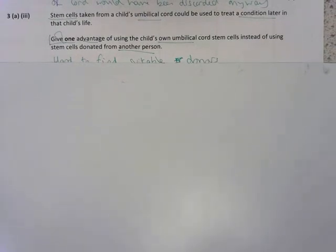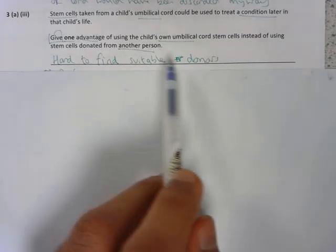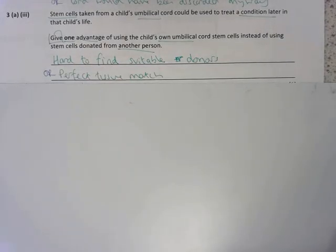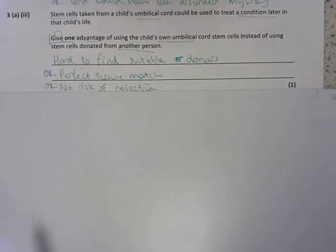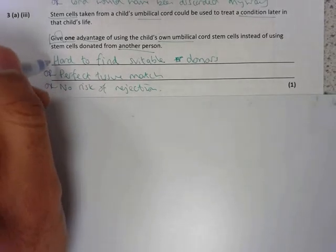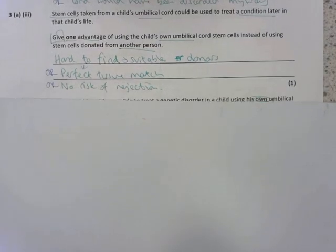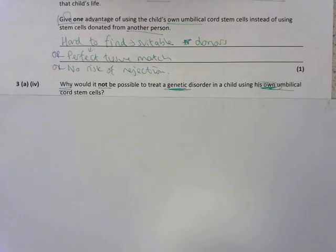3AIII says stem cells taken from a child's umbilical cord could be used to treat a condition later in the child's life. Give one advantage of using the child's own umbilical cord cells. That's the key thing. What's the advantage of using the own umbilical cord cells instead of those donated by another person? Well, first of all, there's a couple of answers. One mark could be it's hard to find suitable donors. The reason that is could be one of your other reasons you got a mark, is it's hard to find a perfect tissue match. And that's because if the tissues don't match, then there's a risk that something will happen. So you could also have said there's no risk of rejection. So you have to say hard to find either a suitable donor or hard to find a perfect tissue match, and there's no risk of rejection. Because your white blood cells would attack the donated cells because the donated cells would have different antigens on their surface, so you think there's been some sort of infection.